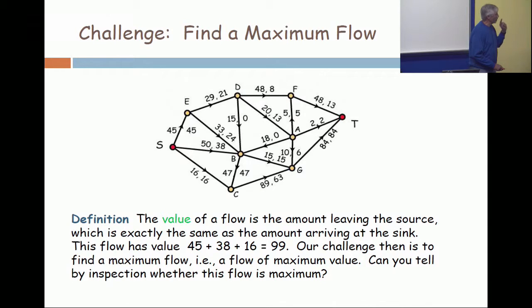45 plus 50 plus 16 is an upper bound. The source only has the capability of producing 45 plus 50 plus 16. You can't go past that and that's 111.